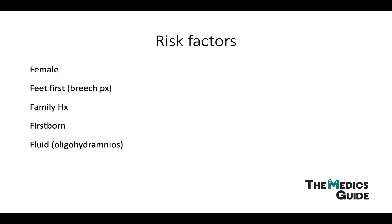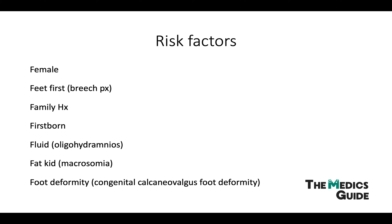Fluid refers to oligohydramnios, which is a lack of fluid in the amniotic cavity. The fluid usually helps to expand the uterus, and with less fluid the uterus isn't as expanded, putting more pressure on the baby. The sixth F is fat kid, which refers to macrosomia. And the seventh is certain foot deformities, like a calcaneovalgus foot deformity, which is very common in children. Remember these seven F's for the risk factors.